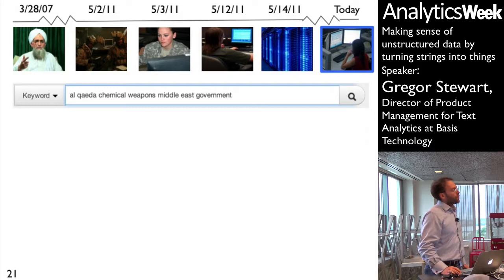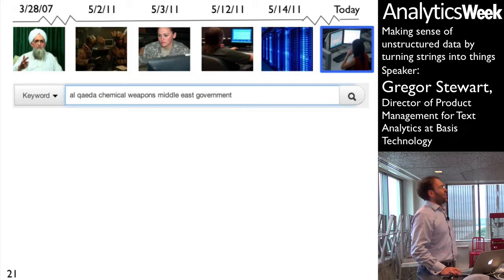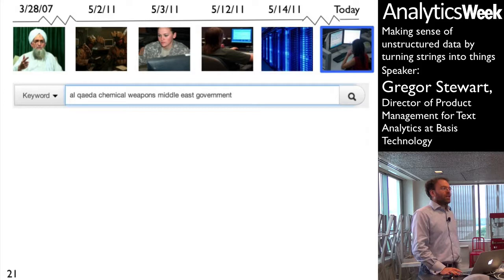It was picked, translated — very likely using a system we helped build — and then indexed using the techniques we've been mentioning. Now Alice has access to this large information store treated in this way. The RT McStrawman of the querying world would just type: Al-Qaeda, chemical weapons, Middle East government. That's a straw man, but not far off what most people do — typing keywords to see what they get and then refining.